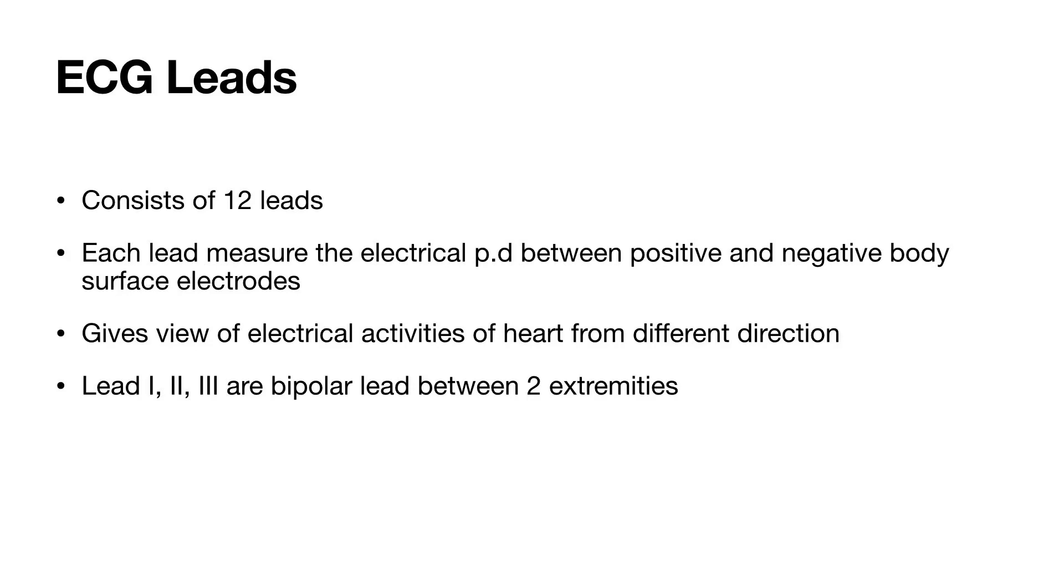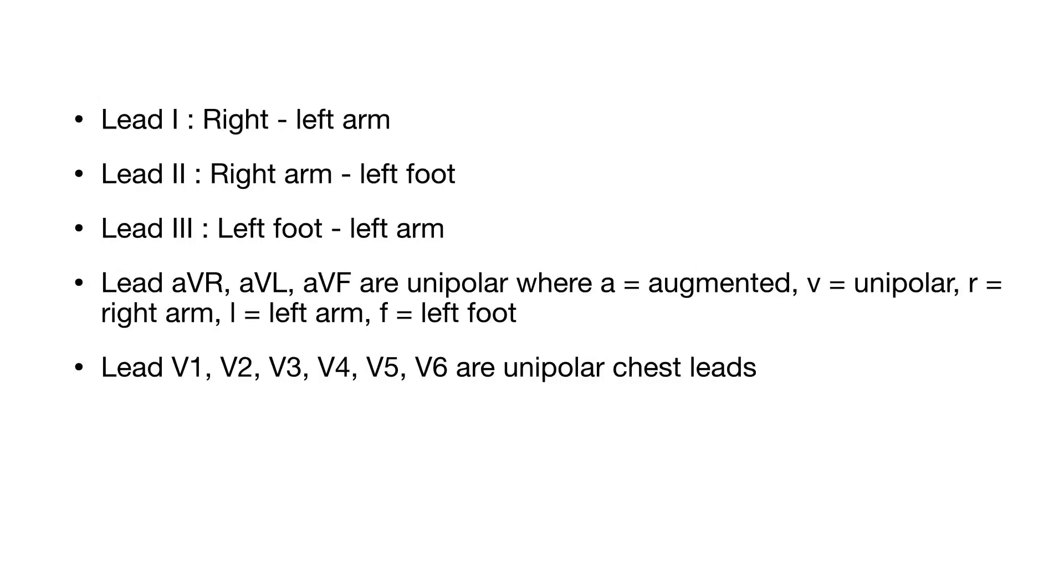Now let's study further about ECG leads. Standard ECG is recorded from 12 leads. Each lead records the electrical potential difference between the positive and negative body surface electrode. Each lead gives view of electrical activity of heart from different direction. Leads 1, 2, and 3 are bipolar leads and record electrical potential difference between two extremities at one time. Lead 1 records electrical potential difference between right arm and left arm. Lead 2 between right arm and left foot. And lead 3 between left foot and left arm.